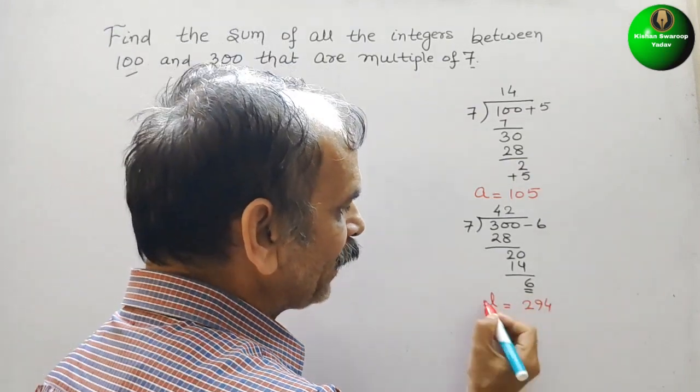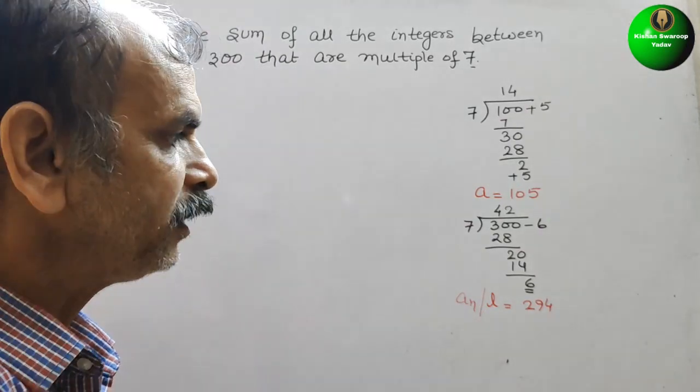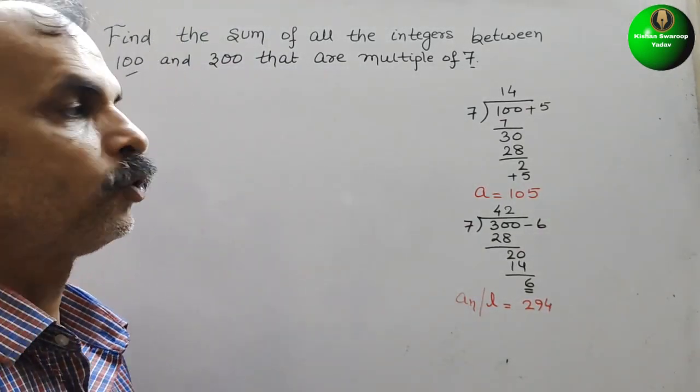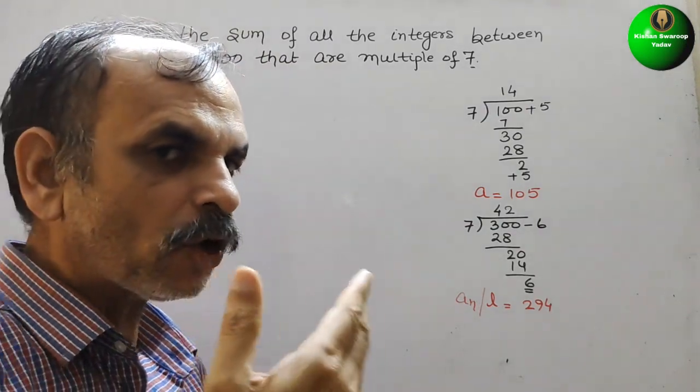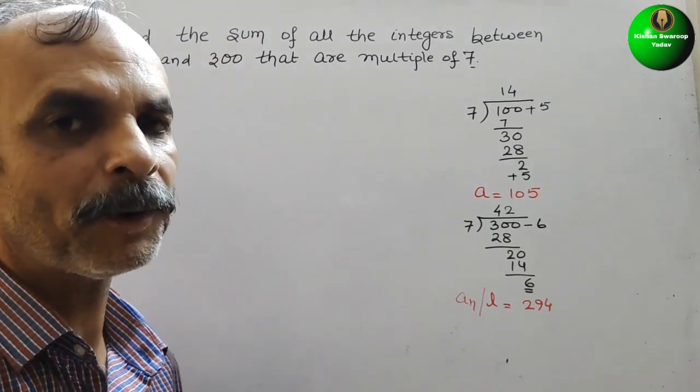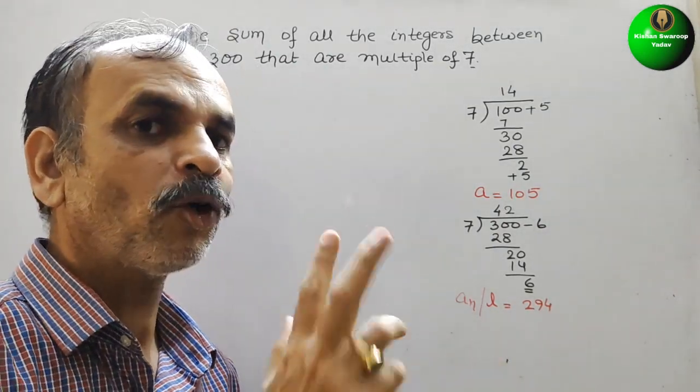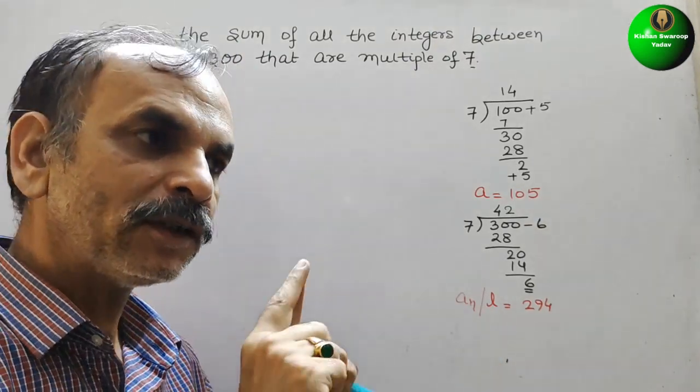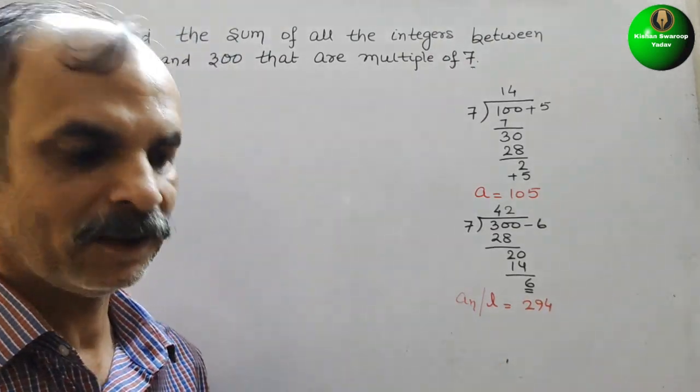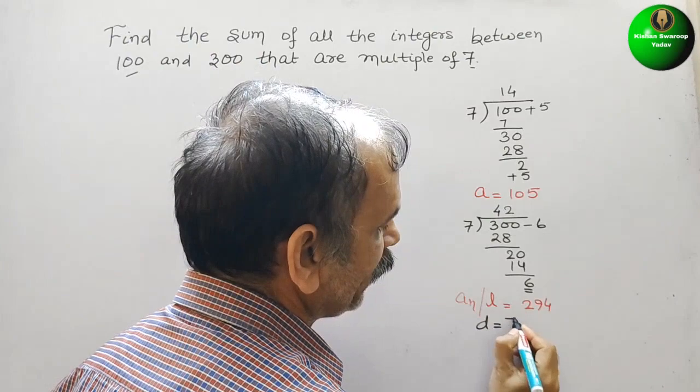So this is not L, this is we can say, this is AN also. So now we will substitute the values. So you can see the multiples of 7 means what, or you can say, multiple of 7 is what? 7, 14, 21, like that. So the difference between them is 7 only, so we can say D is 7, D is 7.